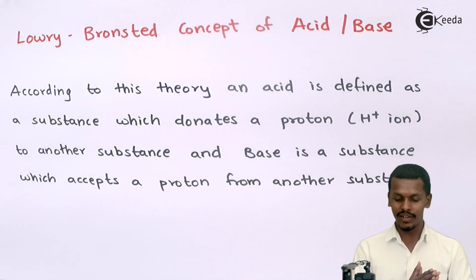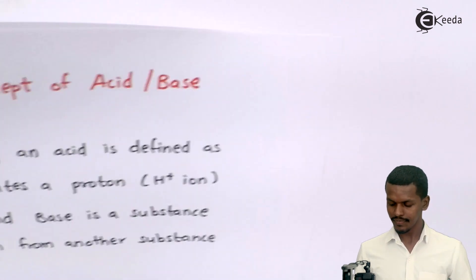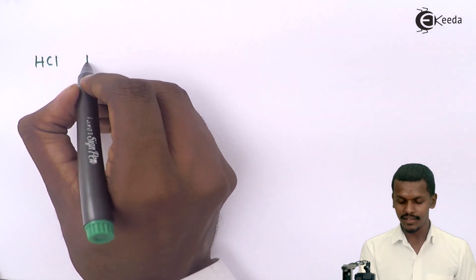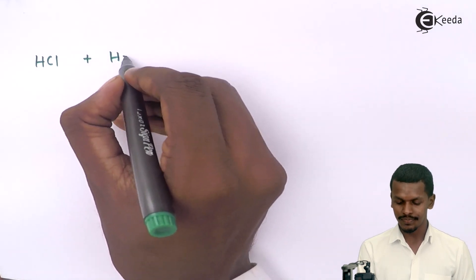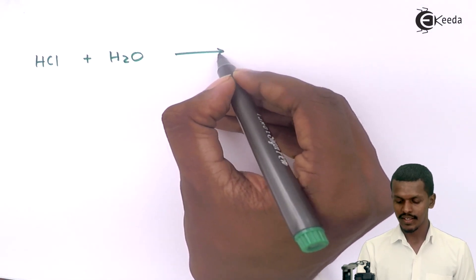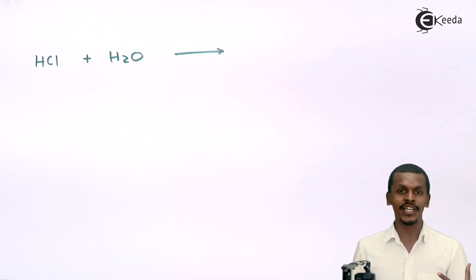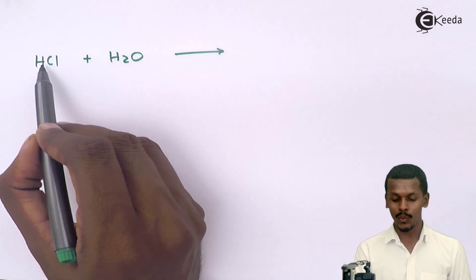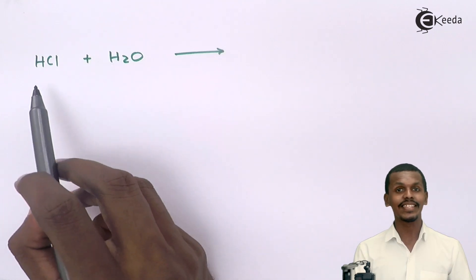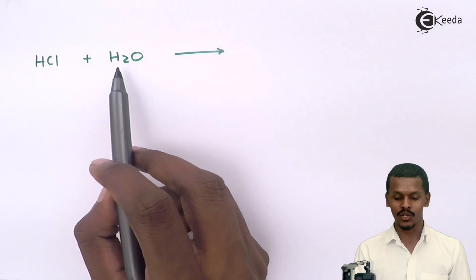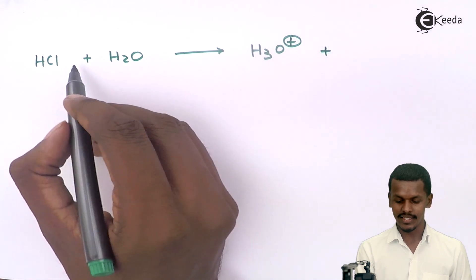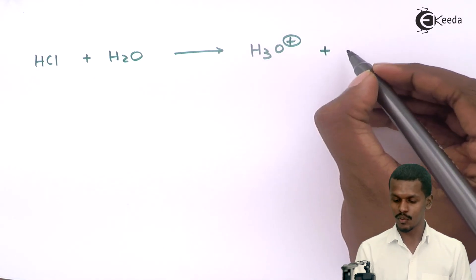Let me give an example so that we can understand it in a better way. Suppose we have HCl reacted with H₂O. Because HCl has the capacity to donate its H⁺ ion, HCl will donate its H⁺ ion to H₂O so as to form H₃O⁺. The only thing left out is Cl⁻.